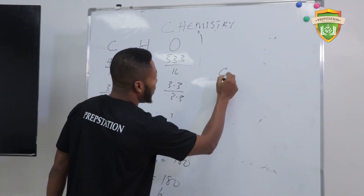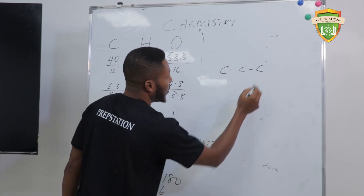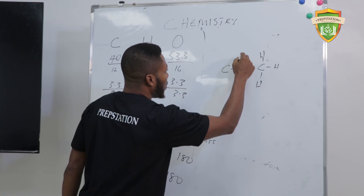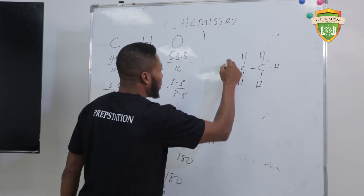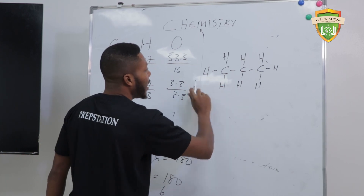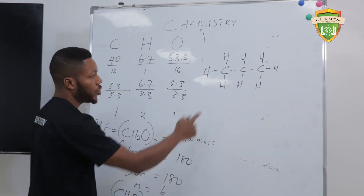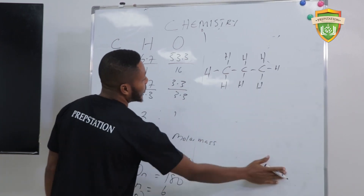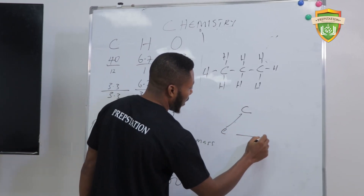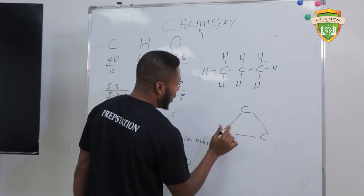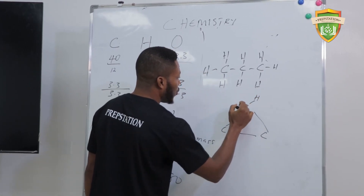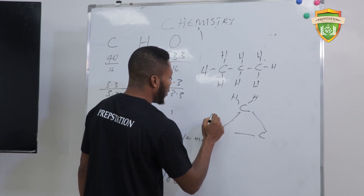Propane is C-C-C. This is a normal alkane, an aliphatic form. Now if you turn this into a ring form, you will lose two hydrogen atoms. That will give us C, C, and C in a ring. Each of them contains two hydrogen atoms.